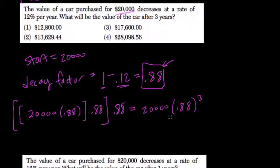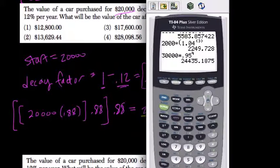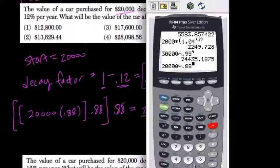And this is generally how these exponential functions work, where the first number is your starting value, this is your decay factor, and this exponent is always the time required for growth. So we can set that up as 20,000 times 0.88 to the third power.